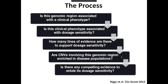For each individual gene or genomic region that we review, we search the literature for evidence supporting or refuting dosage sensitivity as a mechanism for any disease associated with that gene. We ask ourselves the following questions: Is this genomic region associated with a clinical phenotype? Is this phenotype associated with dosage sensitivity? How many lines of evidence are there supporting dosage sensitivity? Are CNVs involved in this genomic region enriched in disease populations? And is there any compelling evidence to refute dosage sensitivity?